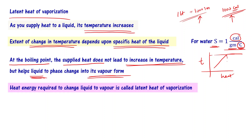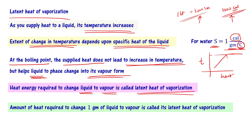The heat energy required to change liquid to vapor is called the latent heat of vaporization. The precise definition: the amount of heat required to change one gram of liquid to vapor is called its latent heat of vaporization.